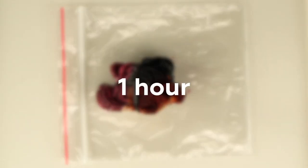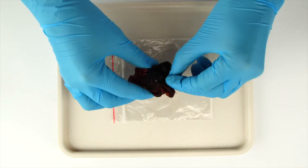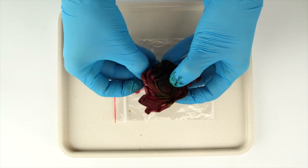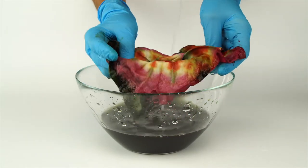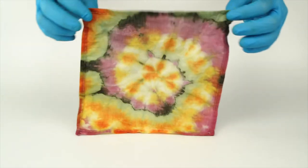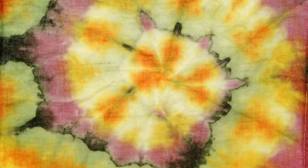Let the cloth sit for one hour. Remove the rubber bands and rinse the cloth with water. Spread the cloth out to see the results. You've made a colorful one-of-a-kind pattern.